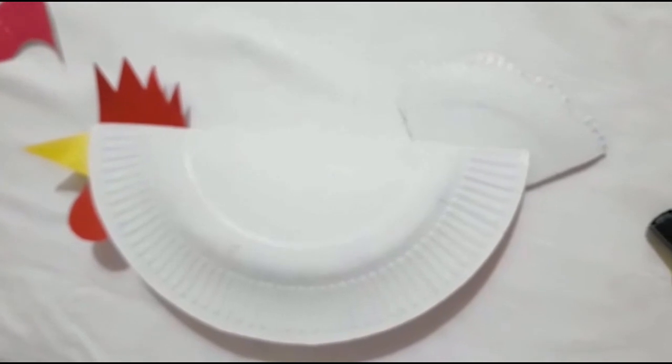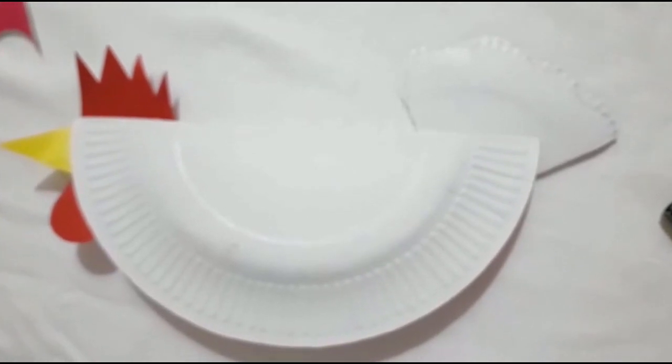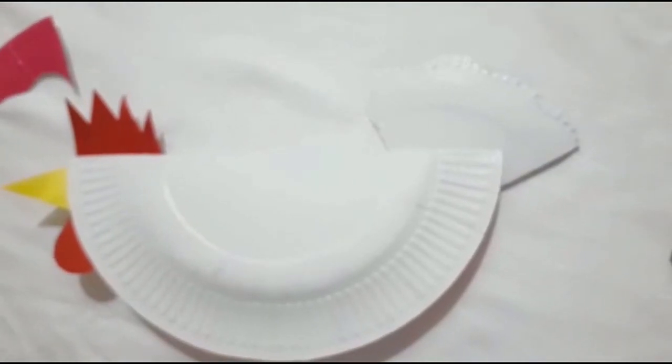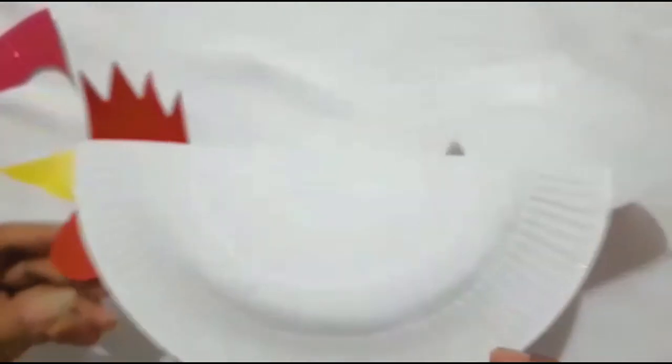Now the last step is to make the eye of the hen. Pick up a black marker pen to draw the eye of the hen just under the crown of the hen.